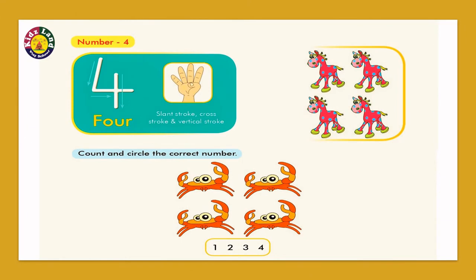Number 4. How many fingers should we show? It's four fingers. One pointer finger, middle finger, ring finger, and the baby finger open. So it is four fingers, and it's the number 4.